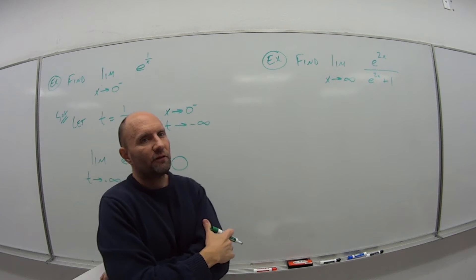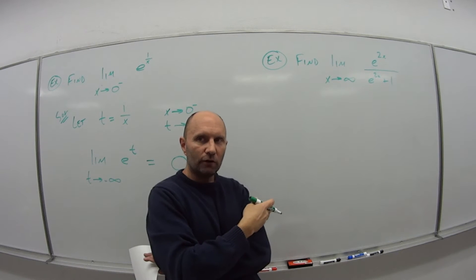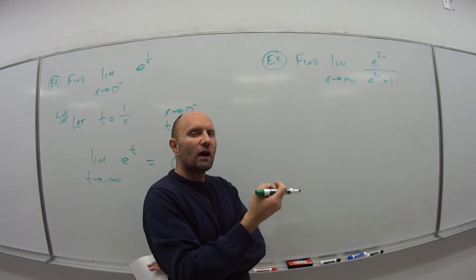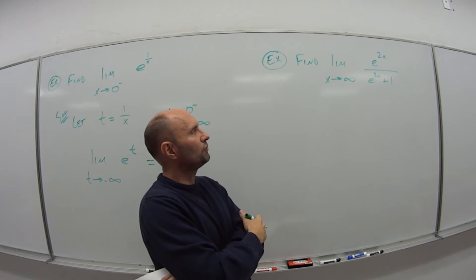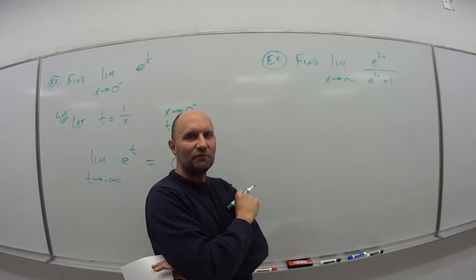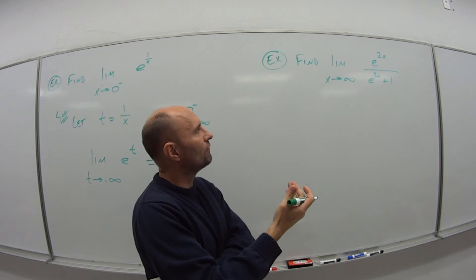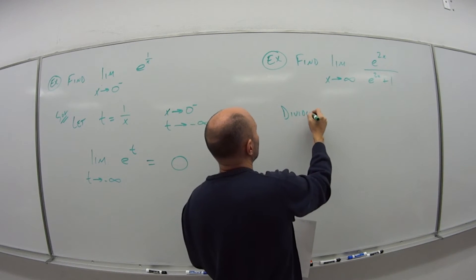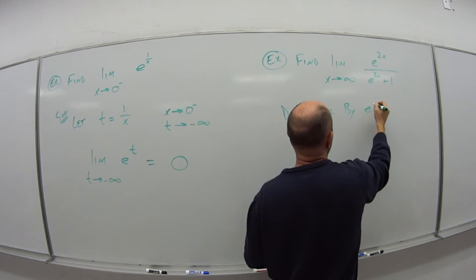When I had something like this in chapter 1, let's say I had some polynomial in the numerator, some polynomial in the denominator. How did I figure out what this limit went to? It was when we were doing vertical and horizontal asymptotes. I divided everything by the largest degree of the denominator, right? So what I'm going to do is divide everything by my e to the 2x.